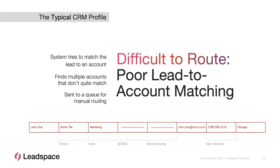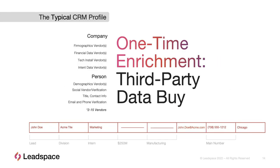Typically what happens is you'll try to match things in a system, find multiple matchable accounts, and a lot of it ends up getting manually routed. You'll have companies where manual routing is just the way everything happens — and it's really time-consuming and quite frankly a waste. This is why CDPs exist. Sometimes people then say they can fix this with a one-time data enrichment buy from a vendor to fix titles, locations, contact information. But that's a really inefficient way to do it — it's a one-time enrichment, and very quickly the information will get out of date.